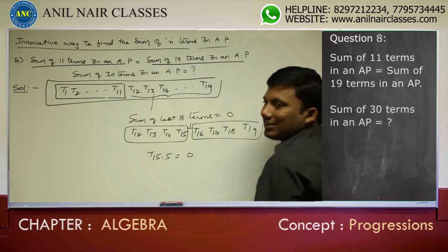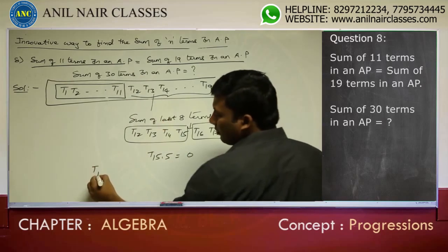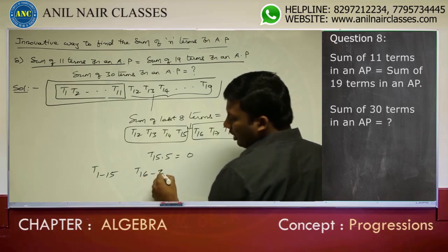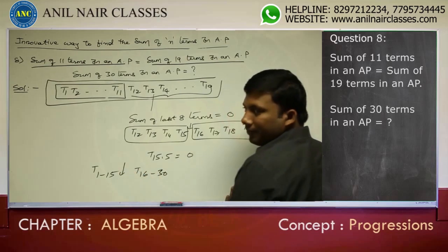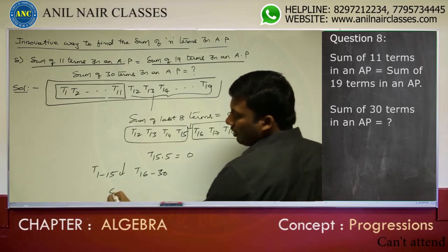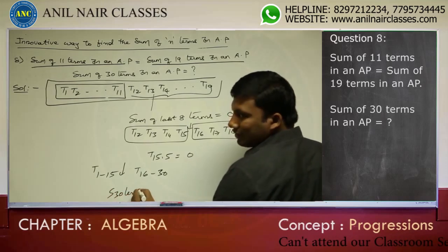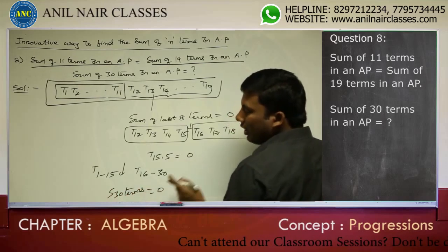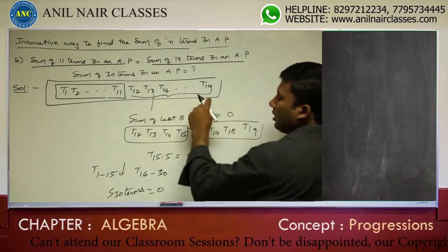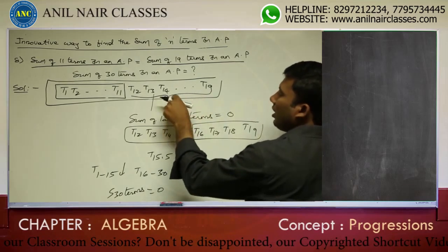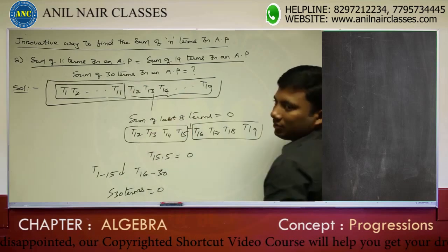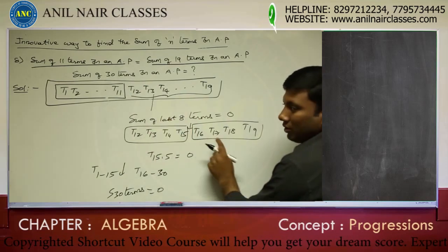Now, how much do we require? Sum of 30 terms. 30 terms means 15 terms to the left and 15 terms to the right. What is the middle value? If 15.5 is 0, what will be the sum of 30 terms? It will be 0. The root cause of this problem is that the average of the last 8 terms happens to be the average of the 30 terms.